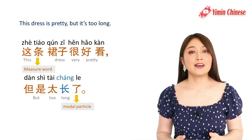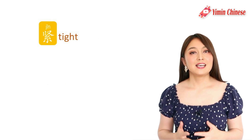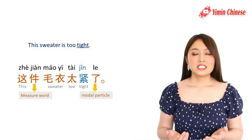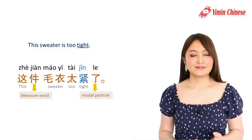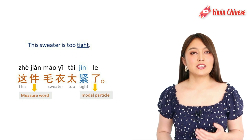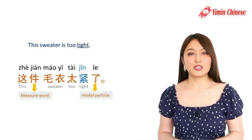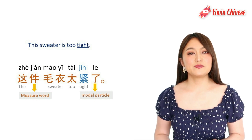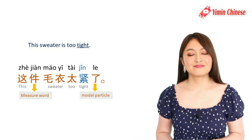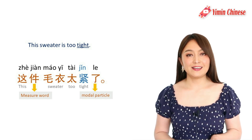Now we have 紧 — tight. For example: 这件毛衣太紧了 — This sweater is too tight. For sweater we use the measure word 件, which is the most common measure word for clothes.